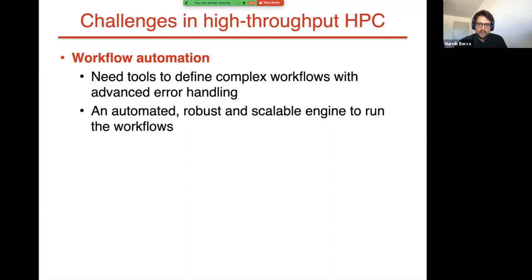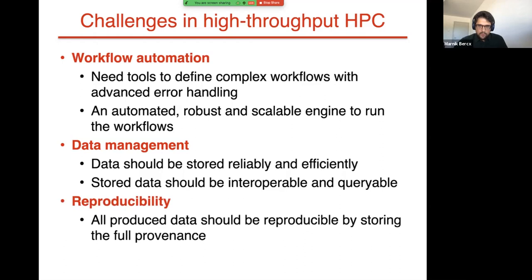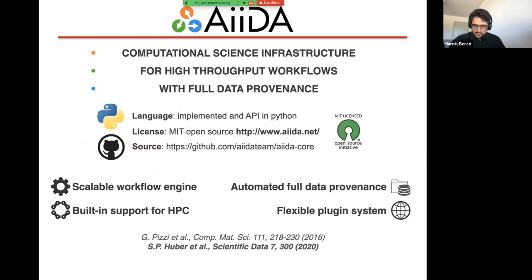Another very important aspect of high throughput computing is data management. When running these calculations, I want all the data generated by my workflows to be stored reliably and efficiently, and I want to share it with other researchers or collaborators so they can query this database. Finally, a very important concept in science is reproducibility. If I have obtained a certain result and published it, I want other researchers to be able to reproduce my result by seeing how exactly I executed my workflows. To enable this, we store what's called the provenance, or the full history of the calculation.